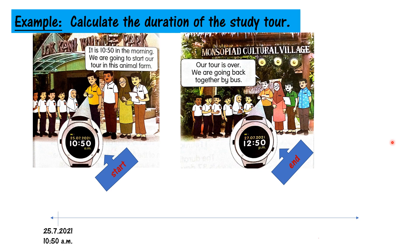Then you write down the start time on the left side. Tuliskan start time-nya di sebelah kiri. Start time is 25th July 2021, time is 10.50 am. Dari jam tangan yang pertama, saya ambil tarikh dan masa. After that, you write down the end time from the second watch — the day, date, and time.